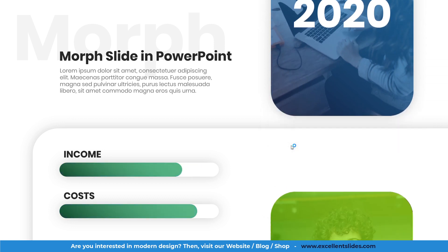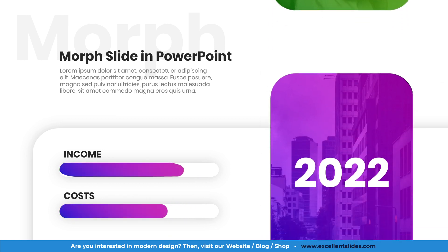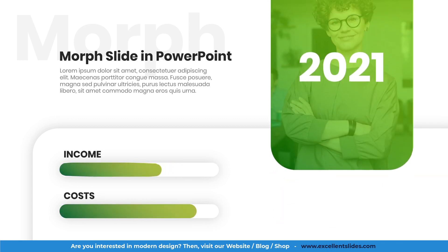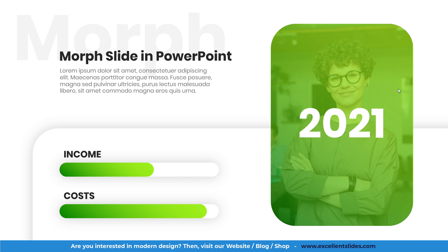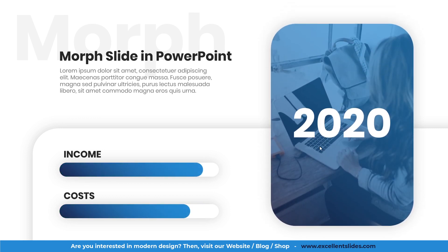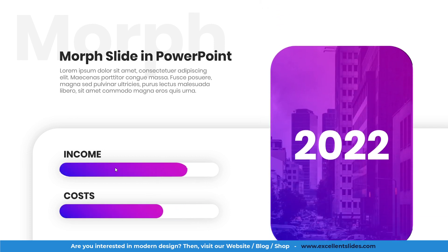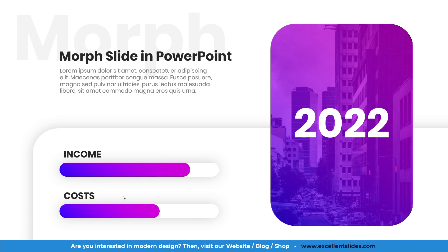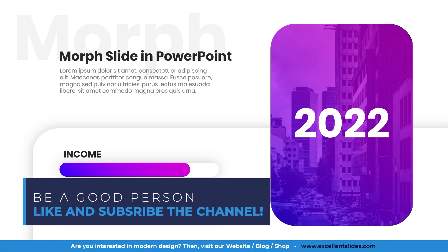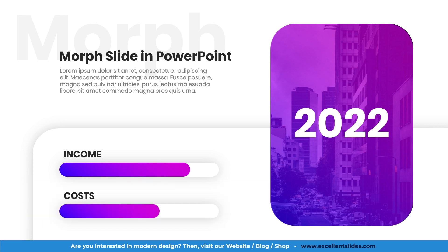Now let's preview all three slides: first slide, click for the second slide — 2021, click again for 2022. It looks really interesting — minimalistic but modern, with photos flying from the bottom. Each slide has matching colors: blue for 2020, green for 2021, pink and violet for 2022. Please subscribe to the channel so you don't miss future videos about PowerPoint Morph and presentation design. Have a great day!